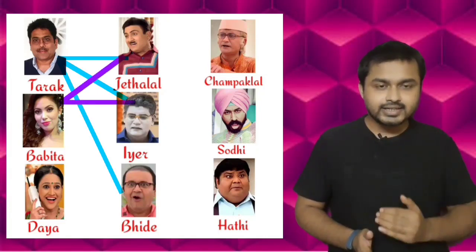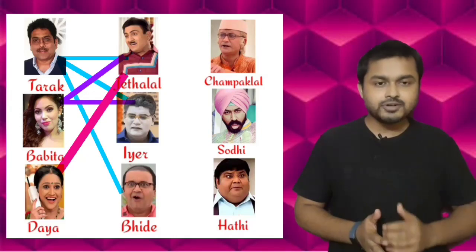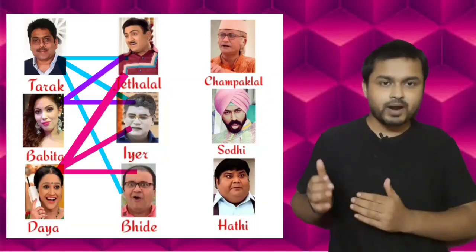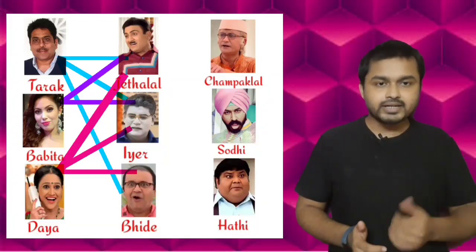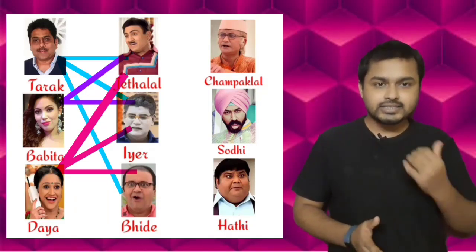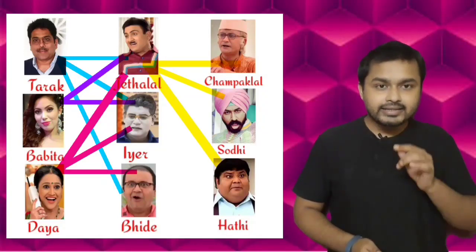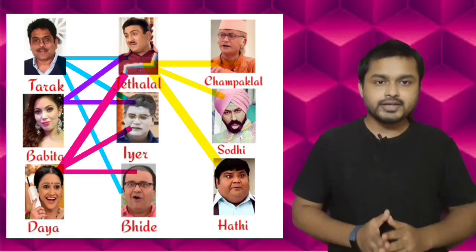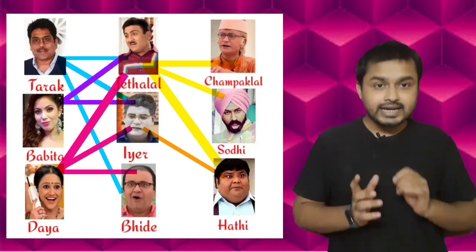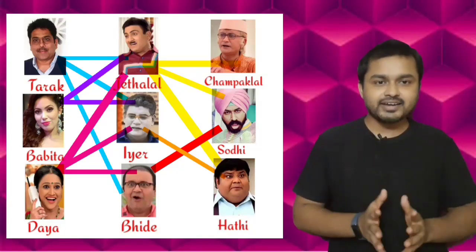The second character, Babita, is friend of Jethalal, friend of Iyer, but not friend of Vire. Daya is friend of Jethalal, friend of Iyer, and friend of Vire. Now for the second group: Jethalal is friend of the last three characters — Champak, Sodhi, and Hathi. Iyer is friend of only Hathi. And Vire is friend of Sodhi.